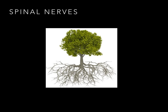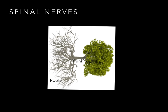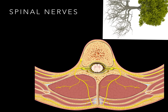To understand them, let's take a look at this tree. When we look at this tree, there are roots, a tree trunk, and branches. That's everything we need to know about spinal nerves, except we just turn it on its side. So there's the roots and the trunks and the branches — roots, trunk, and branches.